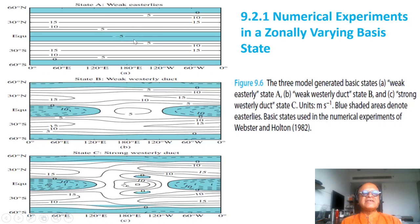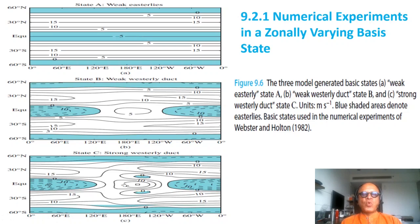Weak easterlies in the deep tropics with westerlies around, weak westerly duct provided in the middles corresponding to the Pacific longitudes, and stronger westerly duct with strong meridional shear and more realistic state that we have been looking at from chapter one onwards.